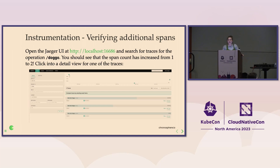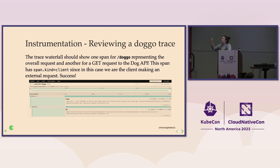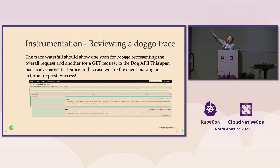We were really curious about the Doggo endpoint, so make sure you make a few requests to Doggo so we can check out what we got by adding this new library. Search the Hello Hotel service and even drop down to the particular operation for slash Doggo. What we should see is the span count increasing from one to two. Our trace waterfall should show that first root span — overall how long it took to respond to the request to Doggo — and we should see a child span underneath for an HTTP GET request out to the Dog API. If you look at span.kind, it is not 'server' in this case — it is 'client,' because we are the client making an external request.